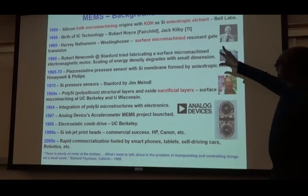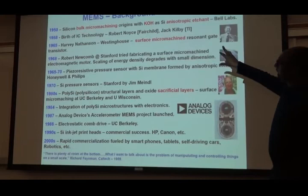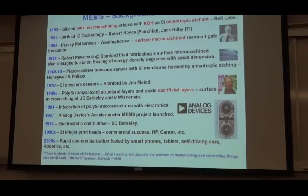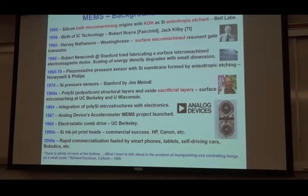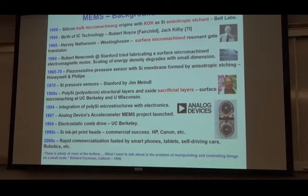Then, in 1958, comes the birth of IC technology — integrated circuits. The concept is: instead of buying a resistor, a switch, a capacitor separately and wiring them on a breadboard, you make a process where everything — the resistor, switch, capacitor — is in one silicon unit, all connected. That's what we call an integrated circuit. That changed the trajectory of the industry. This happened in two places: one in a company called Fairchild, and independently in Texas Instruments.